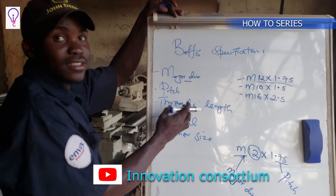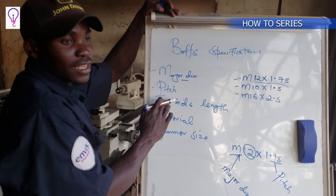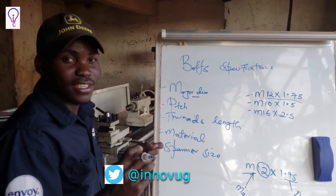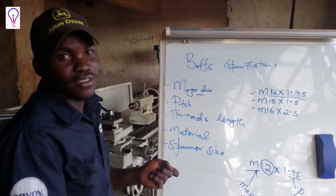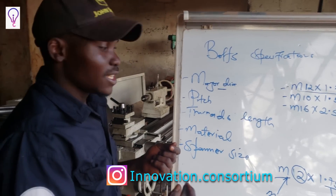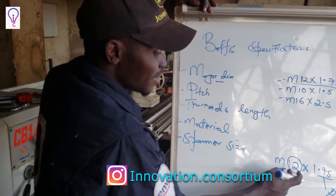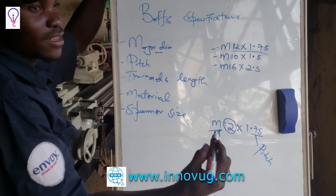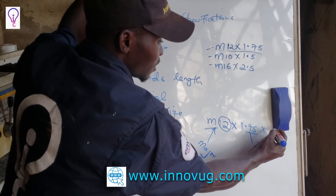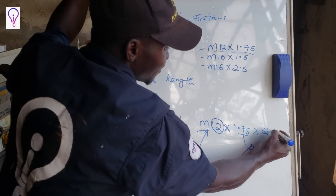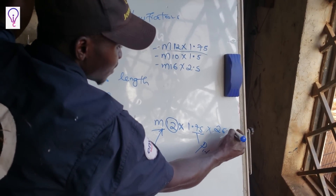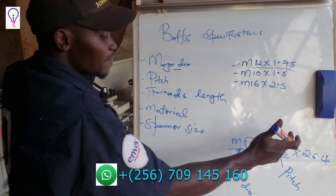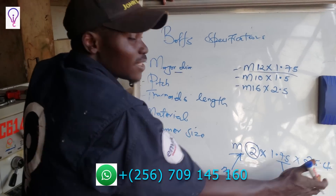The rest that comes in is the length — the length of the threads — depending on the thickness of the object you want to fasten. If you want to tighten something 1 inch thick, you'll have a screw of M12 by a pitch of 1.75 by a length of 1 inch, and 1 inch is 25.4 millimeters. So basically it's the major diameter, the pitch, and the length.